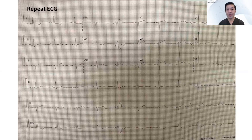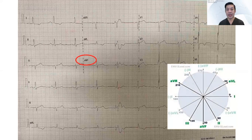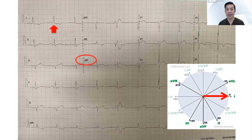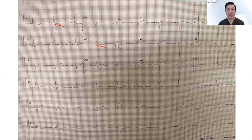So we have requested a repeat ECG, making sure that the electrodes are placed where they should be positioned, that the standard paper speed is at 25 millimeters per second, and the amplitude is at 10 millimeters per millivolt. Looking at the axis again using the same system, AVF still demonstrates equiphasic QRS, so the lead perpendicular to it is lead 1. Examining lead 1, which is now predominantly positive, it means the axis is going towards lead 1, which is zero degrees. Re-examining this ECG, we also note the presence of ST segment depression in leads 1 and AVL, and T-wave inversions in V4, V5, and V6.